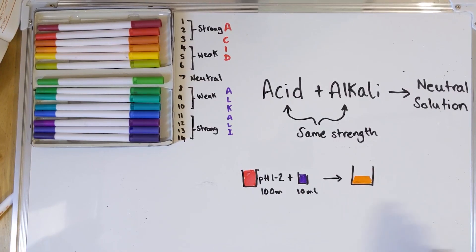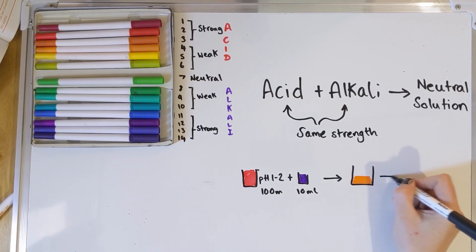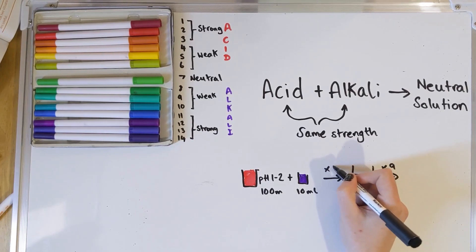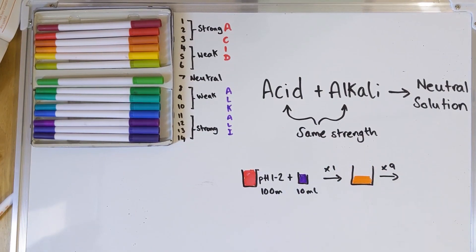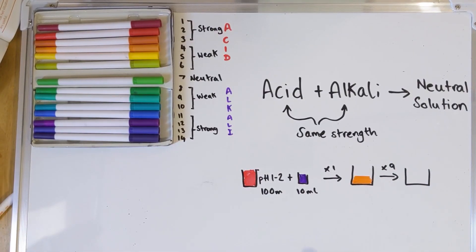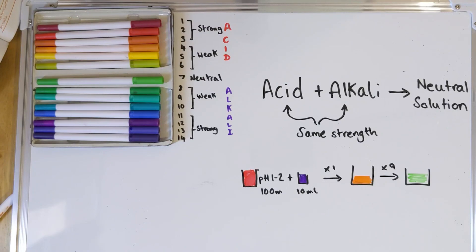If you kept adding 10 mils ten times over, giving you 100 millilitres of each, you'd get progressively less acidic — adding it once you'd get orange, and if you did that 9 more times you would end up with a neutral solution, because you've added the same quantity of acid to alkali.